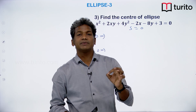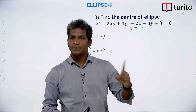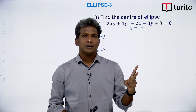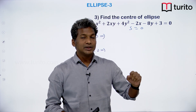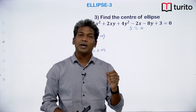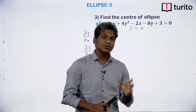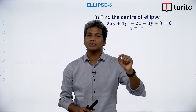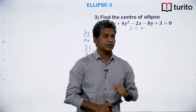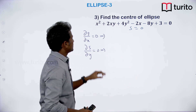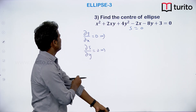The conics which have centers are: ellipse, hyperbola, circle, and also pair of straight lines. The pair of straight lines is also a conic which has a center — it is the point of intersection of the lines. This method using partial derivatives can be used to find the center. Let us quickly solve the problem.